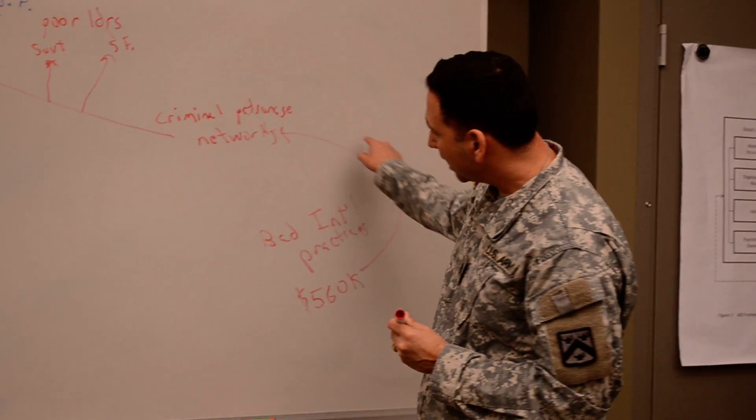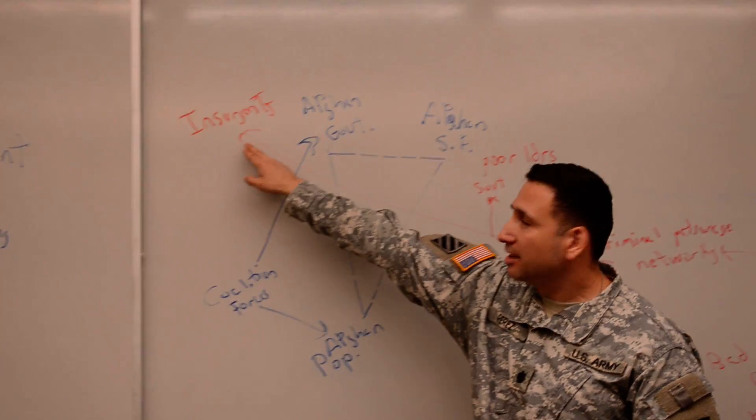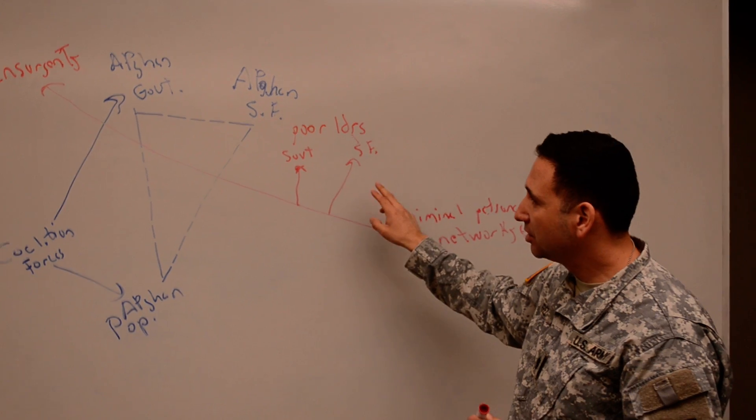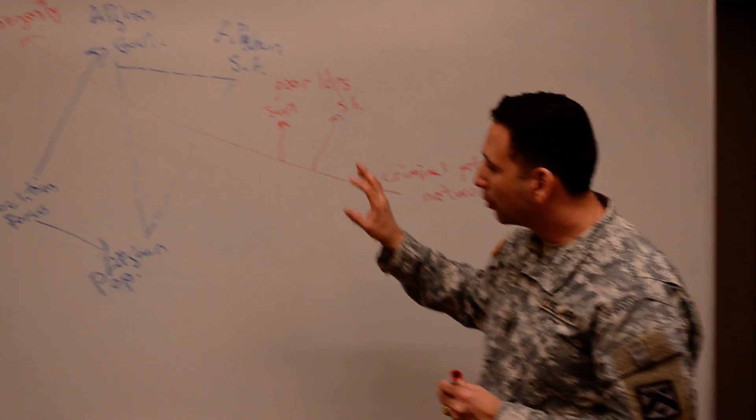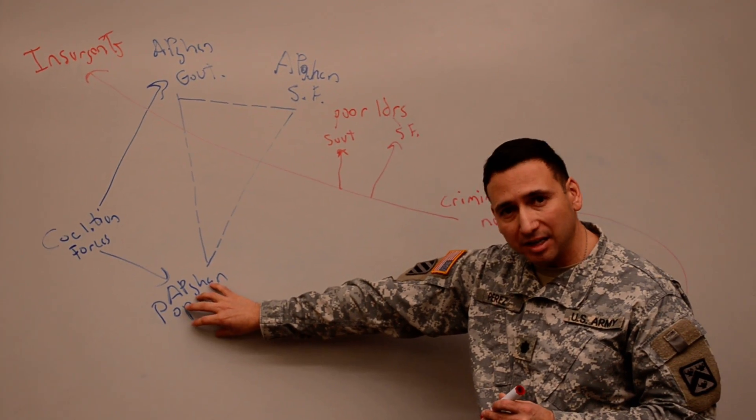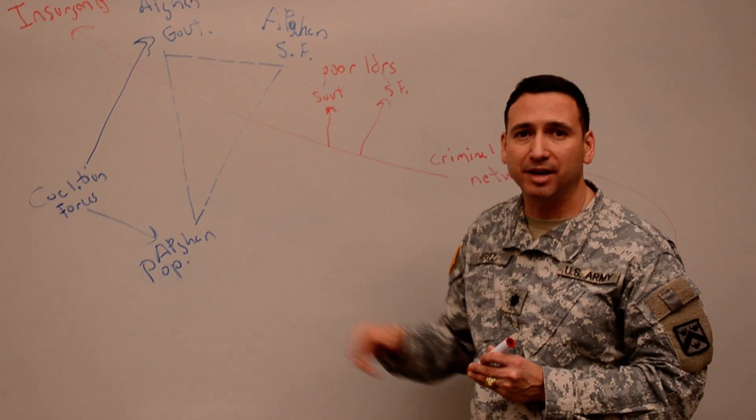So what we have is a well-intentioned international community that dumps $560,000 into the economy that otherwise wouldn't be there. It then has a feedback effect by strengthening the networks, strengthening the insurgents, and strengthening the hand of the poor leaders. All this does is further break the confidence that we're trying to establish that the population has for the Afghan government security forces, because now the enemies can do their job better.